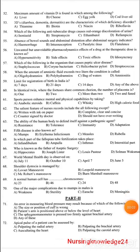Hello everyone, discussing part four. The question is: the maximum amount of vitamin D is found in which of the following? Options: a) liver, b) cheese, c) egg yolk, d) cod liver oil. The answer is d) cod liver oil.